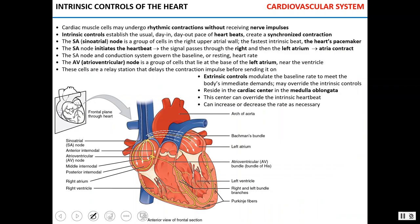The heart contracts due to electrical signals traveling through its muscle in the electrical conducting system, also called the intrinsic conducting system of the heart. The system contains multiple pacemaker cells that set the rhythm of cardiac contractions. First, the sinoatrial node, which is the pacemaker node, generates an impulse that spreads through the walls of the atria, leading to depolarization of atrial muscles and contraction of the atria.